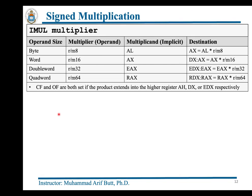After unsigned multiplication, let us discuss the x86 IMUL instruction, which is the signed variant of the MUL instruction. Like MUL, IMUL is a single-operand instruction, which can be an 8-bit, 16-bit, 32-bit, or 64-bit register or memory address. The implicit multiplicand and destination are the same registers as with MUL. The main difference is that IMUL treats its operands as signed two's complement numbers.